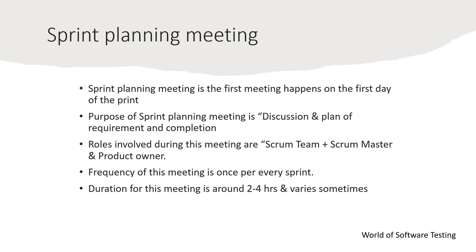Once the product backlog is ready, the sprint planning meeting happens and everybody from the scrum team is involved. The team reviews all the stories in the backlog, and some stories are picked for that particular sprint based on the scrum team's commitment. Based on those committed stories, the sprint backlog document is created.